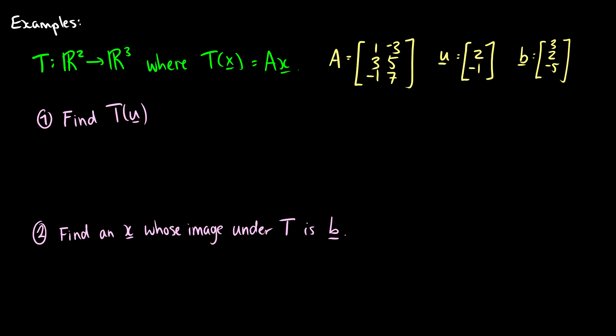For instance, we have a transformation from R2 to R3, and T(x) is the matrix times x. We have a matrix A, a vector u, and a vector b. I want to find T(u) — the transformation applied to u. This function says we take our vector x and multiply it by the matrix A, so T(u) is just A times u, which we've done before.